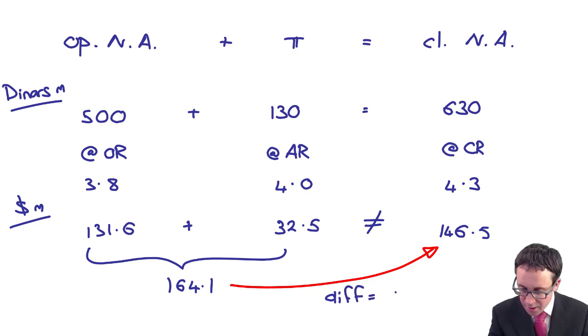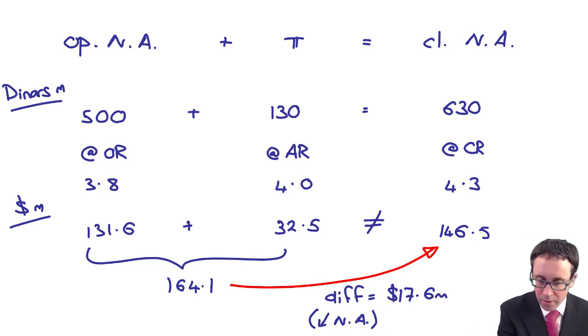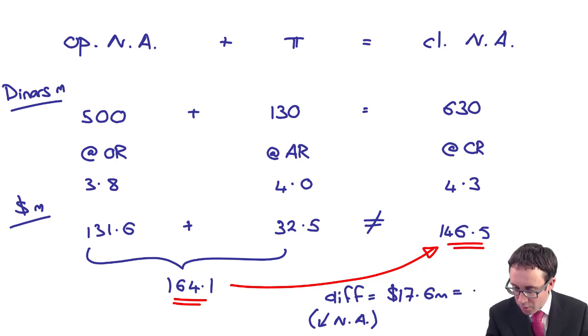So the difference that you have there, the difference is it's 17.6 million. That difference is a reduction in those net assets. So if that's the case, what we have is a loss in the year on translation of the overseas subsidiary of 17.6.